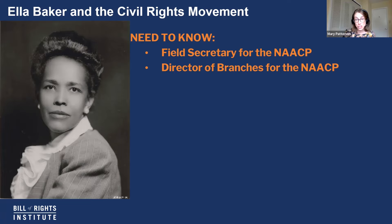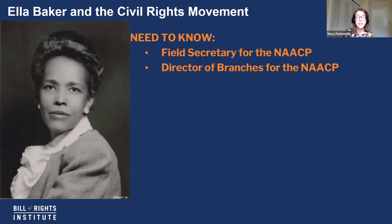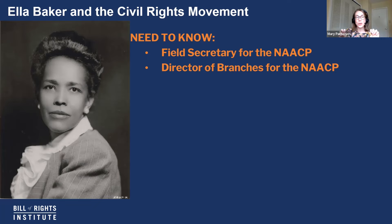She worked as field secretary for the NAACP and then became director of branches — this picture on the left dates from when she took over this role — making her the highest ranking woman in the NAACP. But she left this job because she became frustrated with the bureaucratic nature of the organization. A bureaucracy is really all the administration and offices that help a large organization run. Ella Baker believed that more leadership should be given to people at the bottom, in the local branches — a key belief in grassroots leadership that she embraced her entire life.